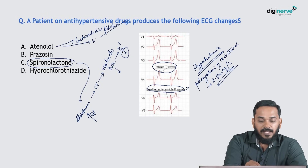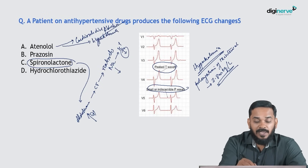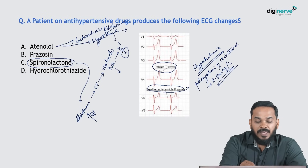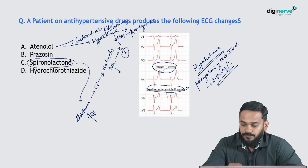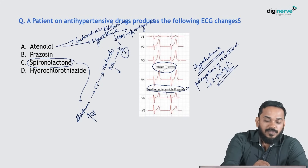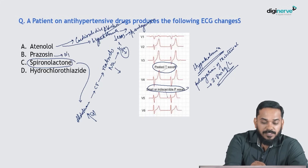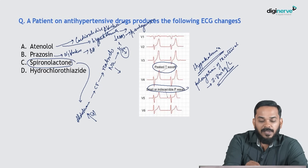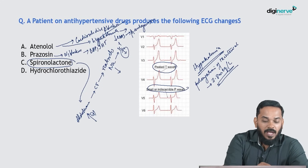Hyperkalemia with beta-1 antagonists is extremely rare and is possibly due to inhibition of the renin-angiotensin-aldosterone system. Prazosin is an alpha-1 adrenergic receptor blocker used for benign prostatic hyperplasia and systemic hypertension. Hydrochlorothiazide is a thiazide diuretic.